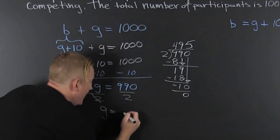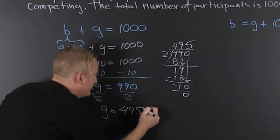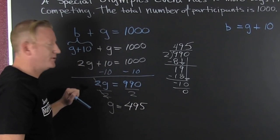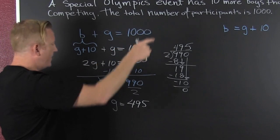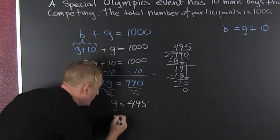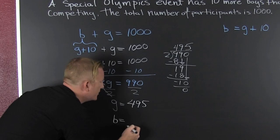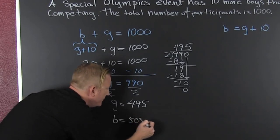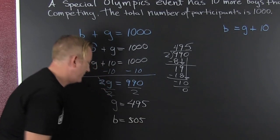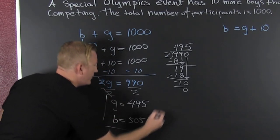So I have 495 girls competing, and the boys are ten more than that — girls plus ten — so that's 505. And there you go: 495 girls and 505 boys in these Olympics.